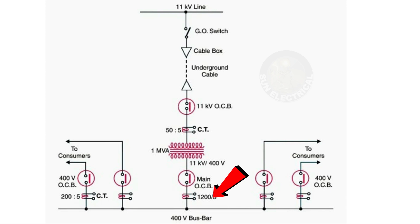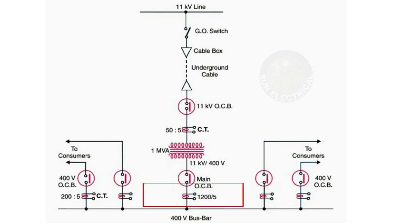The current transformer is placed here with a ratio of 1200 to 5, meaning the input is 1200 amps and the output is 5 amps. For the incoming 11kV supply, the current is 1200 amps, and the output is 5 amps. So the incoming high-voltage current is 1200 amps, stepping down to 50 amps and then 440 amps, with a 5-amp output from the CT.